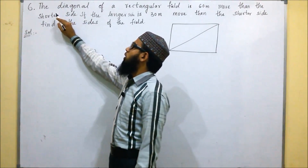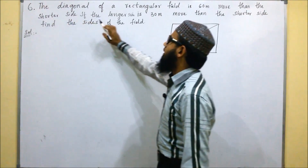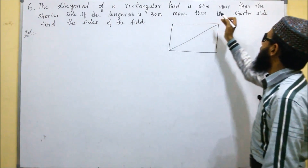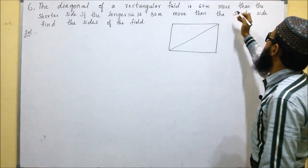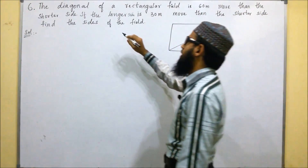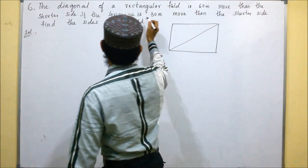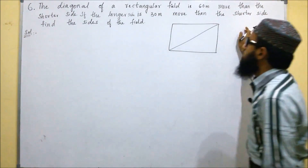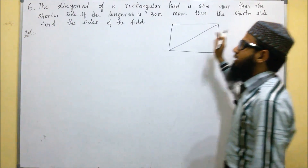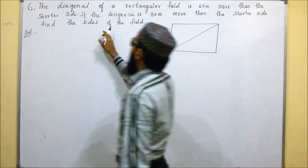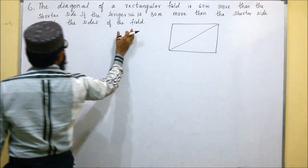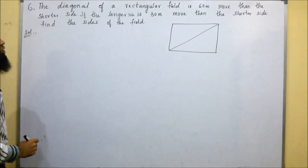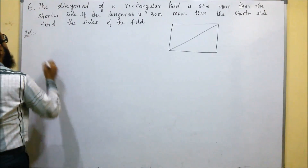This is the sixth problem. They said that the diagonal of a rectangular field is 60 meters more than the shorter side. If the longer side is 30 meters more than the shorter side, find the sides of the field. So we don't know the shorter side.